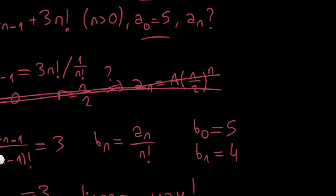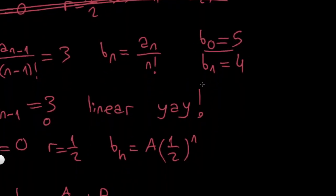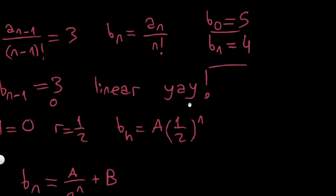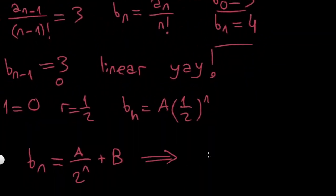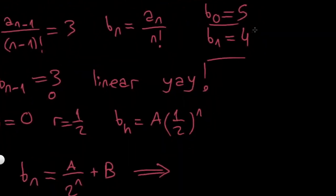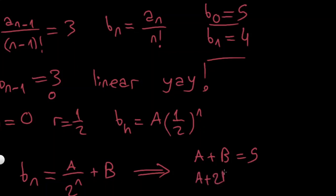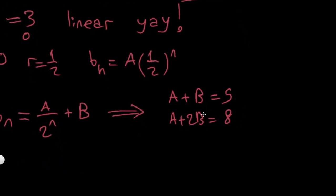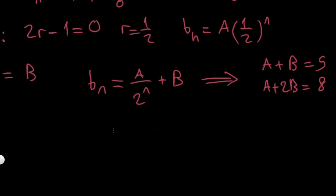It's a coincidence that the first two values are the same for both sequences — it won't hold for later terms. Now I substitute the initial values. For n equal to 0: a plus b equals 5. For n equal to 1, multiplying both sides by 2: a plus 2b equals 8. The difference gives b equals 3, and therefore a equals 2.